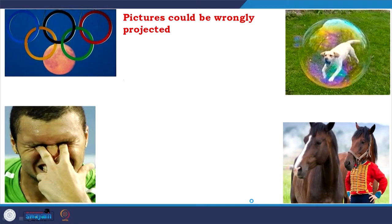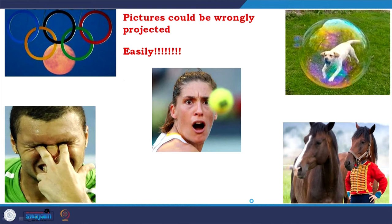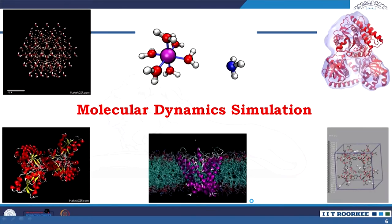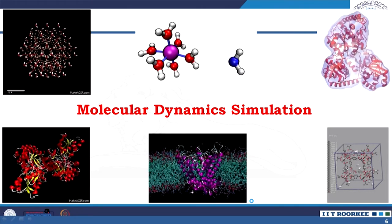Sarcastically we say it is media, but it is true that by taking a picture, a lot of things could be represented in a very different way than what the reality is. Pictures could be wrongly projected. Also, if you look at this picture where Steffi Graf is facing a tennis ball, you would want to know what happened next. Pictures sometimes tell us incomplete stories, and with the help of dynamics, we could have solved this problem.